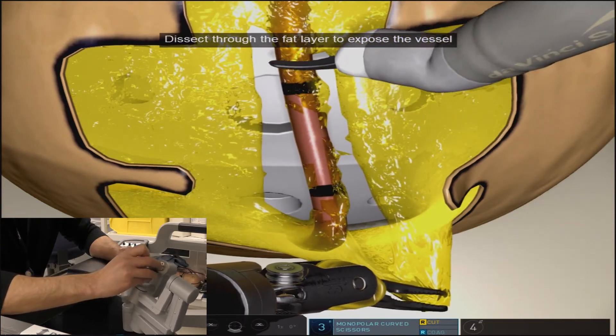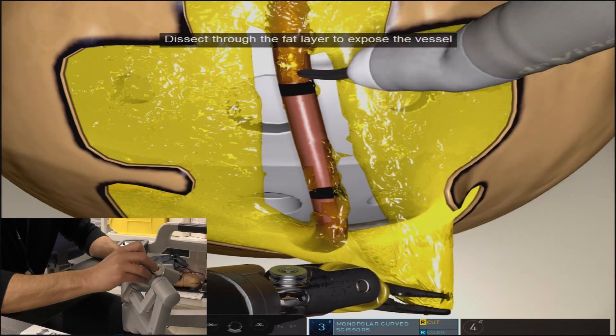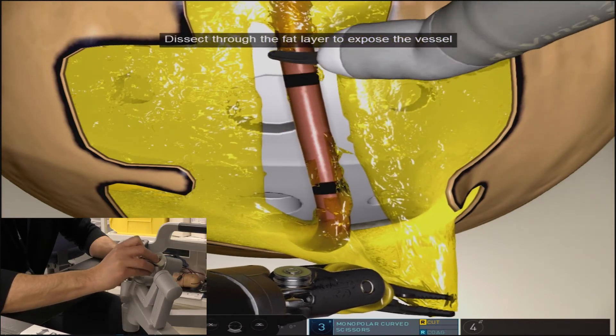As long as there still is some residual fatty tissue on the anterior surface of the vessel, the exercise will not allow you to proceed to the next part.